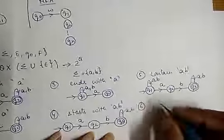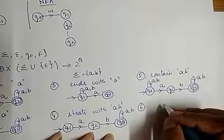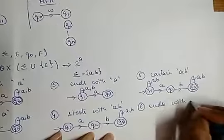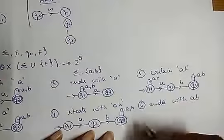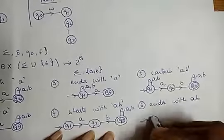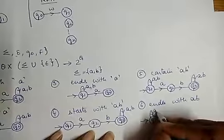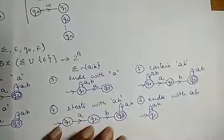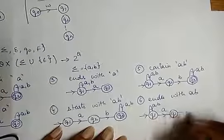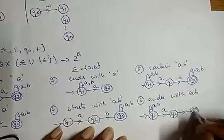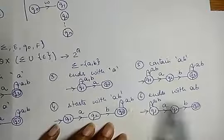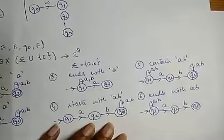Sixth example: I have to draw an NFA for all strings which end with AB. If Q1 is the initial state, I don't care what comes at the beginning — whether A or B. It always ends with AB. This NFA accepts all strings which end with AB.